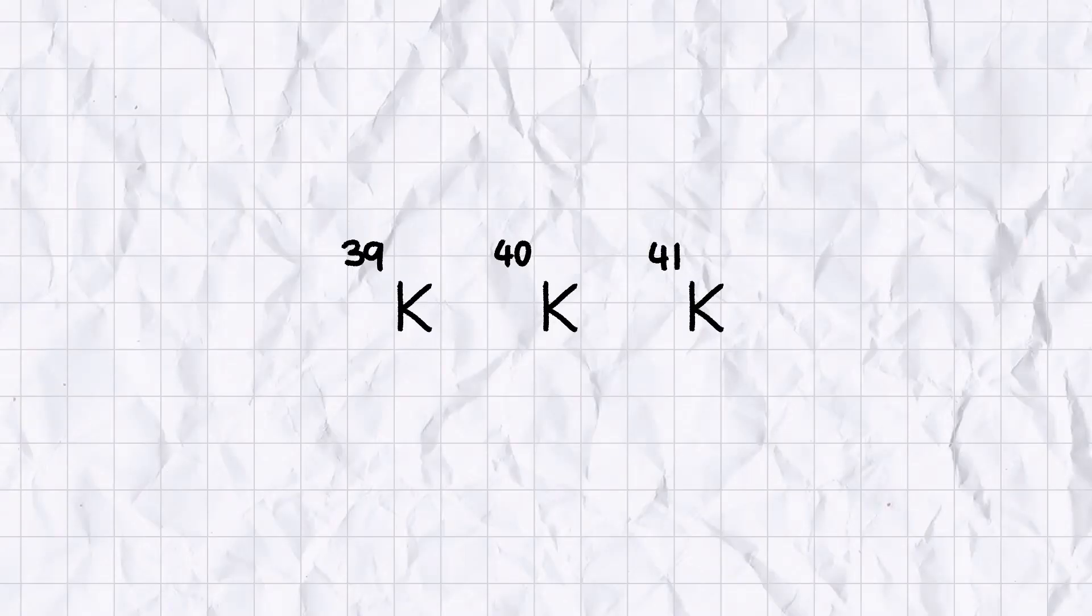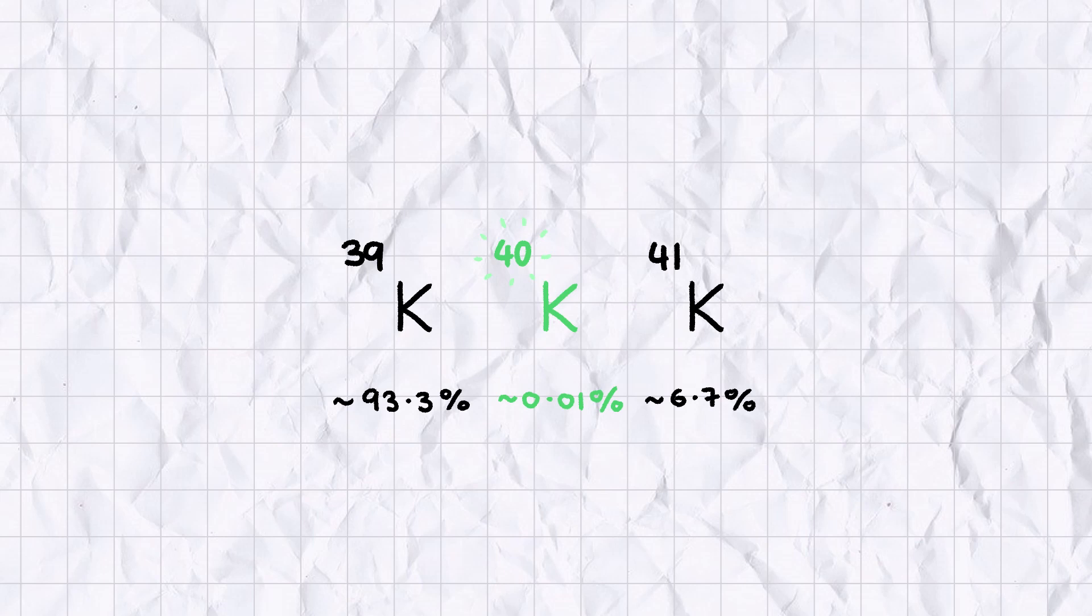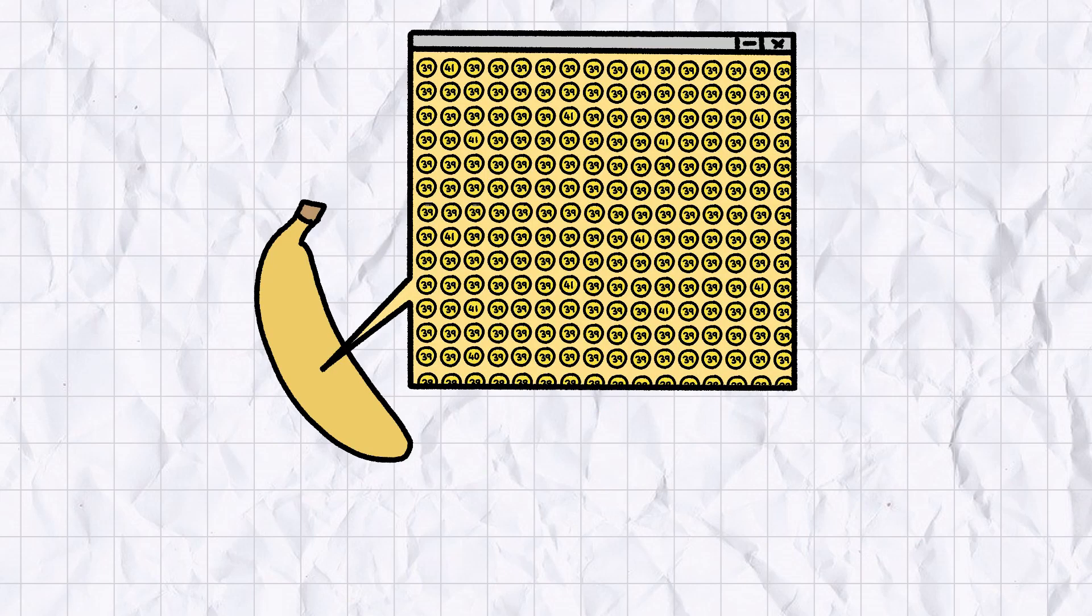Of potassium's three naturally occurring isotopes, potassium-40, the middle one, is very weakly radioactive, making up about 0.01% of all naturally occurring potassium on Earth. Due to the high levels of potassium in bananas, it's a numerical inevitability that at least some of the atoms you eat will be potassium-40.